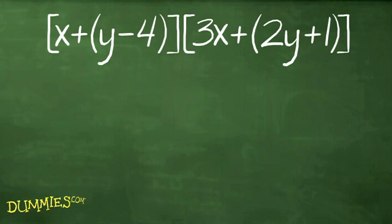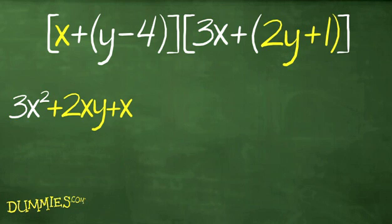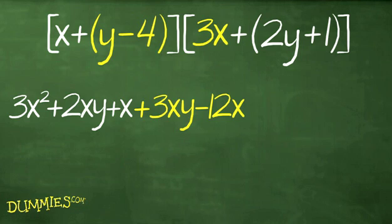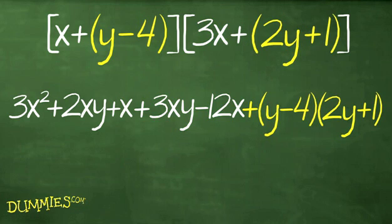Just like before, the first step is to multiply the first terms. Then, multiply the outer terms, third, multiply the inner terms, fourth, multiply the last terms. The last terms are two binomials too. You FOIL these binomials when you finish this series of FOIL steps.